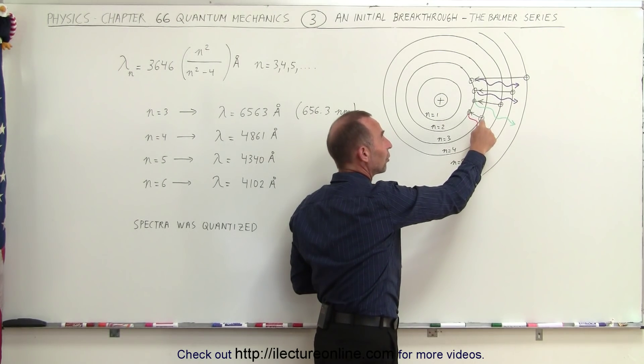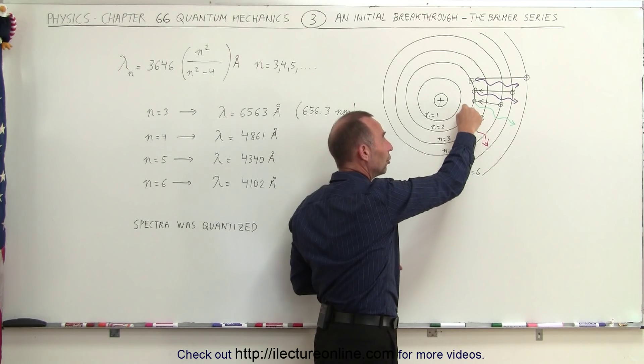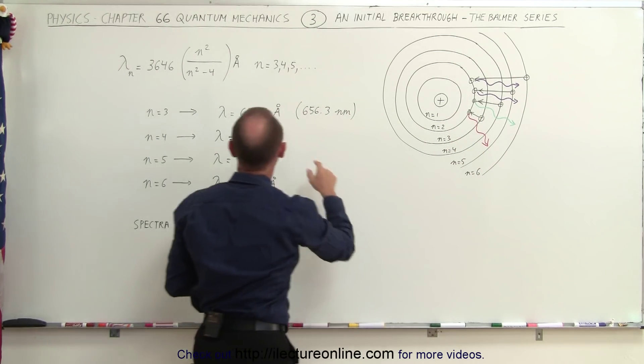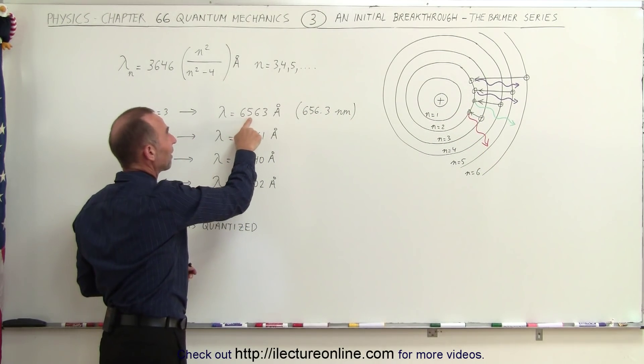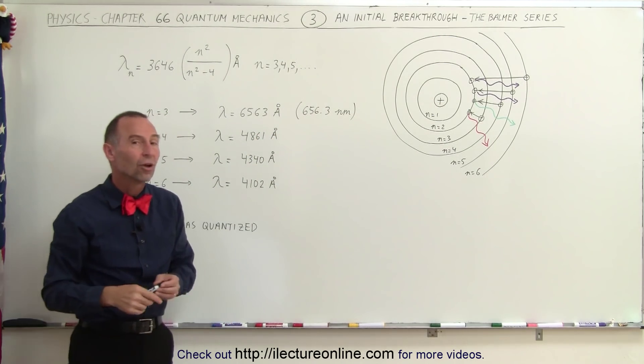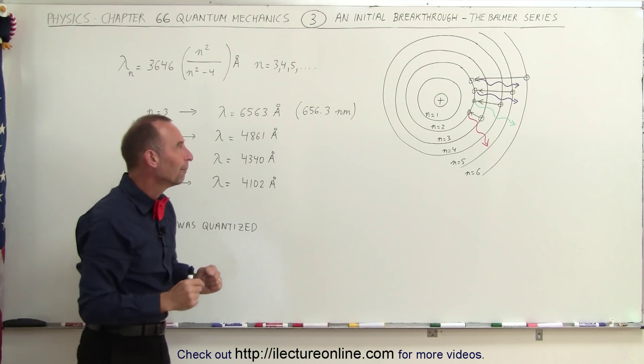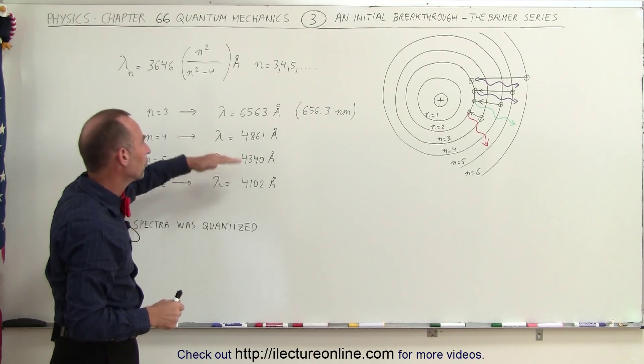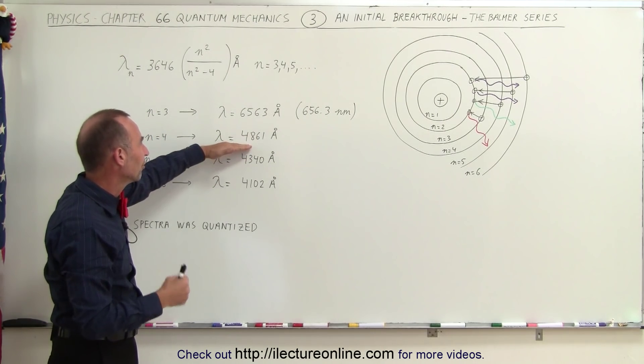When an electron jumped from the third level down to the second level, the wavelength emitted then could be calculated. It turned out to be 6563 angstrom, which is 656.3 nanometers, which is in the red portion of the rainbow colors of the electromagnetic spectrum in visible light.